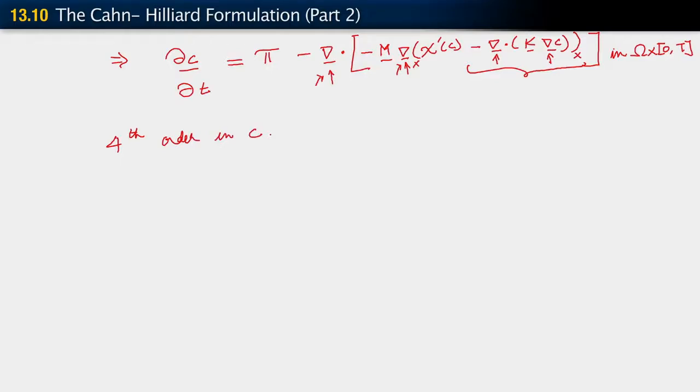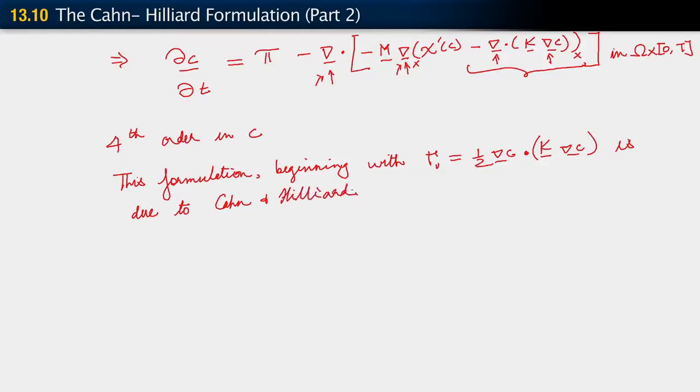This form, which comes from modeling interfacial energy as depending upon gradient of c, is due to Cahn and Hilliard. This formulation, this transformation which begins with this way of writing that interfacial free energy, is due to Cahn and Hilliard. And therefore this PDE that we just put down is called the Cahn-Hilliard equation.